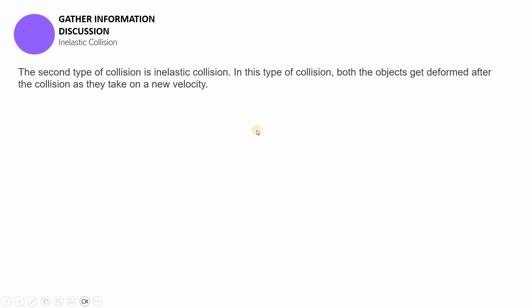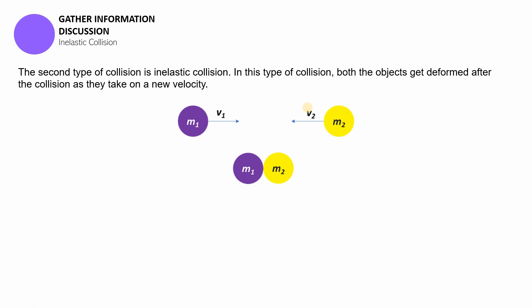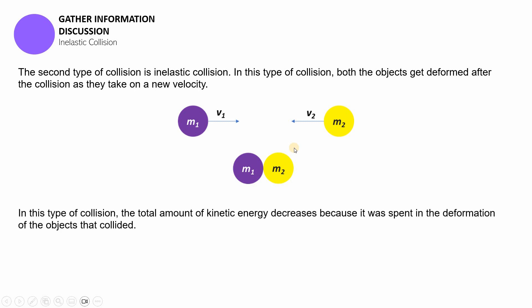So let's jump in. For the second type of collision, which is inelastic collision, the objects are also going to move towards each other. Just like in elastic collision, there is this particular movement of objects towards each other and then they're going to collide. However, in this type of collision, the total amount of kinetic energy is actually decreasing because it was spent in the deformation of the objects that collided. And in this kind of collision as well, aside from the deformation, there is a common direction in which they move, as shown in this visualization.